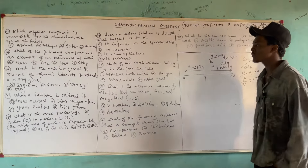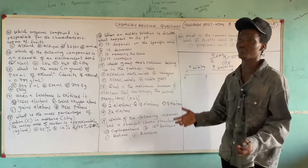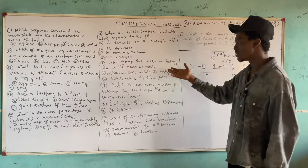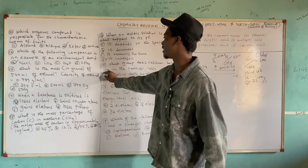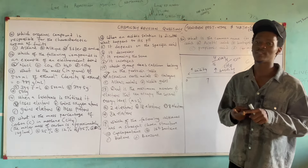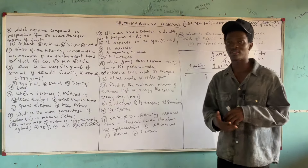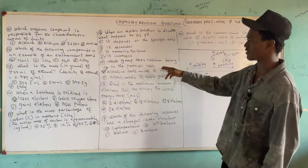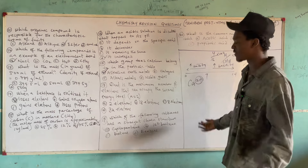Question 17: Which group does calcium belong to in the periodic table? Groups are vertical columns and periods are horizontal rows. Calcium belongs to group 2 elements, which are called the alkaline earth metals. Group 1 elements are called alkali metals, group 7 are halogens (salt formers), and group 8 are noble/inert gases. Calcium forms Ca²⁺, confirming it is in group 2. The correct answer is alkaline earth metals.